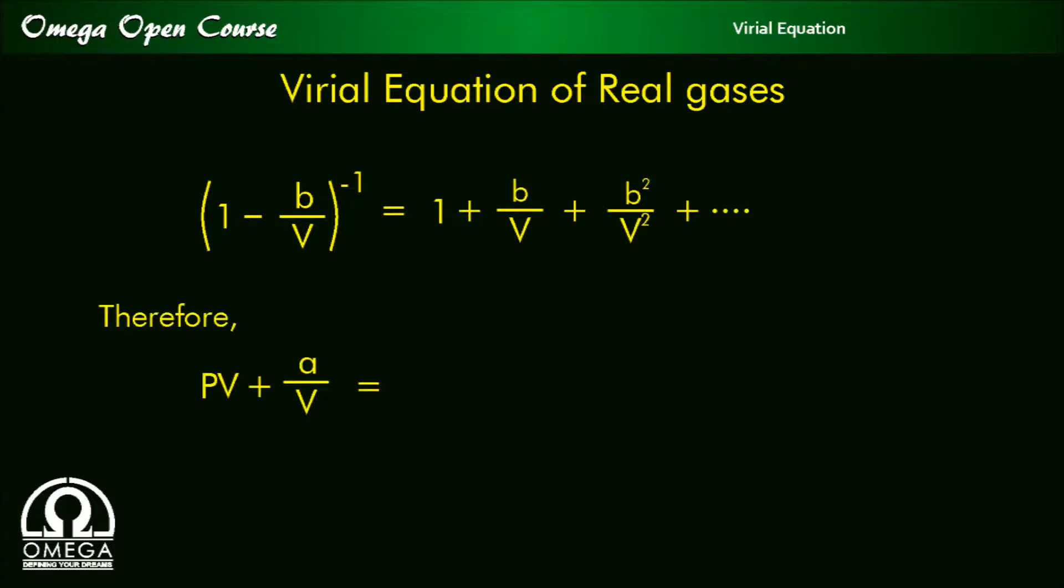Therefore, p plus a by v square is equal to RT into 1 minus b by v to the power minus 1, or p plus a by v square is equal to RT into 1 plus b by v plus b square by v square up to infinity.